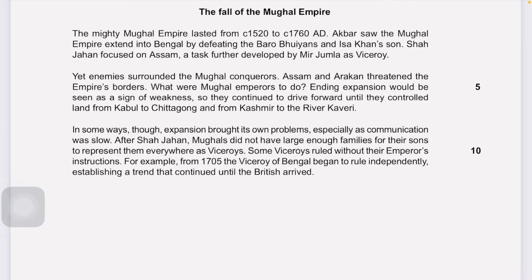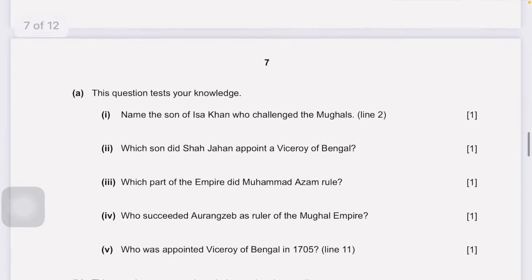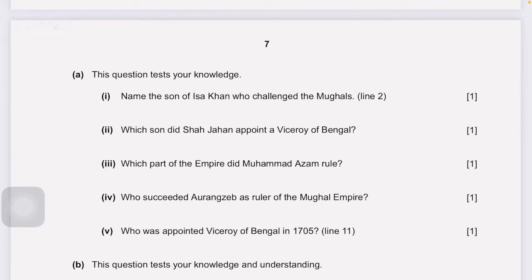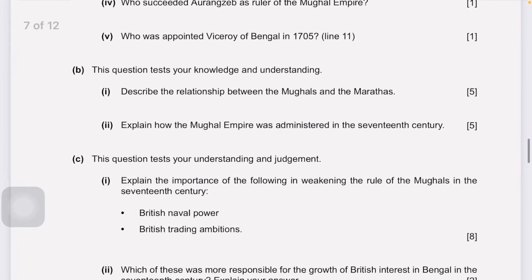Now moving to Part A, which tests your knowledge. One: name the son of Issa Khan who challenged the Mughals — the answer is Musa Khan. Two: which son did Shah Jahan appoint viceroy of Bengal — the answer is Prince Shuja. Three: which part of the empire did Mohammed Azam rule — the answer is Gujarat. Four: who succeeded Aurangzeb — the answer is Muazzam. Five: who was appointed viceroy of Bengal in 1705 — the answer is Murshid Quli Khan.